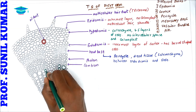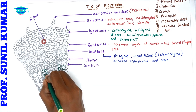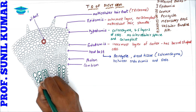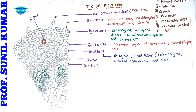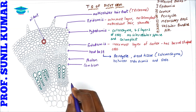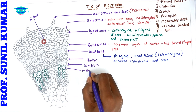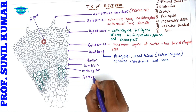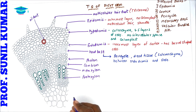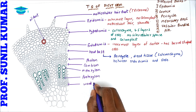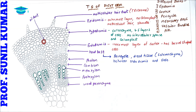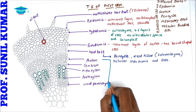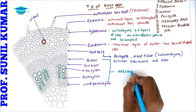The meta xylem is present towards the periphery, and the proto xylem is present towards the center. The big cells represent meta xylem and the small ones are proto xylem. Below the proto xylem there is wood parenchyma. All these structures together form the vascular bundle.